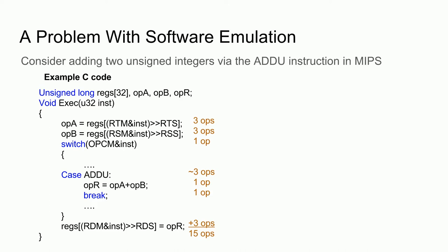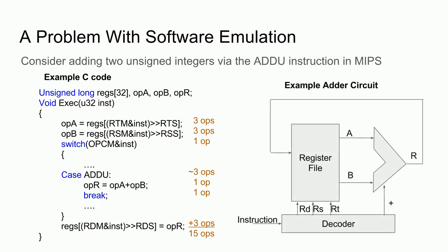Note that I said operations and not cycles. This is because different operations can take different amounts of cycles. For simplicity, however, let's assume the CPU can do all operations in one cycle. Now let's look at a hardware implementation. Here, the instruction decoding is done in hardware all at once, where the decoder tells the register file which values to pull out and where to store the result. Additionally, the decoder can tell the arithmetic logic unit to perform an ADD operation. All of this can be done in a single cycle.